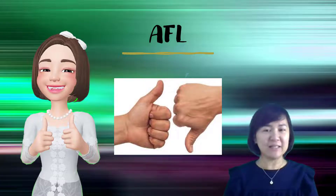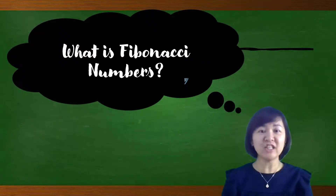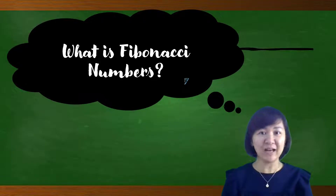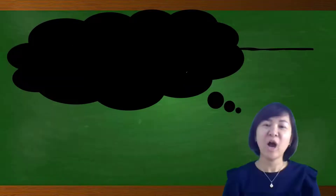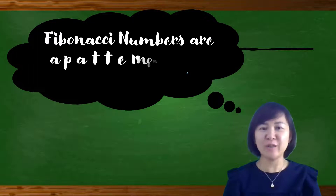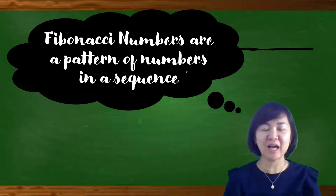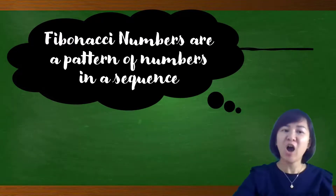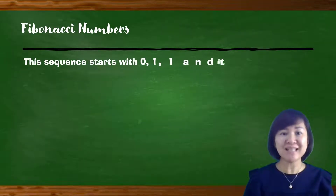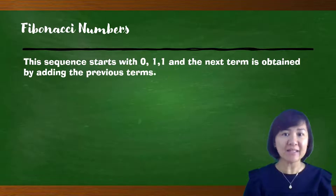Let's jump into another subtopic: Fibonacci numbers. What are Fibonacci numbers? They are numbers created following the Fibonacci pattern. Before we go to the examples, let's look at the definition. Fibonacci numbers are a pattern of numbers in a sequence. The sequence must start with 0, 1, 1, and each next term is obtained by adding the two previous terms.